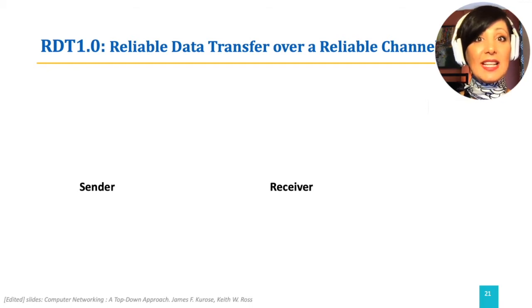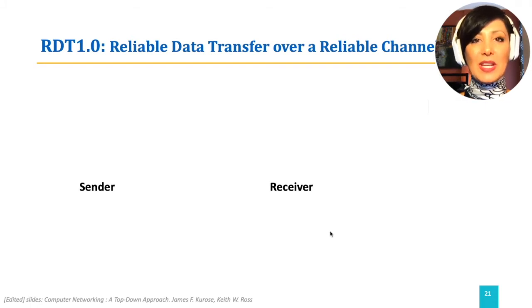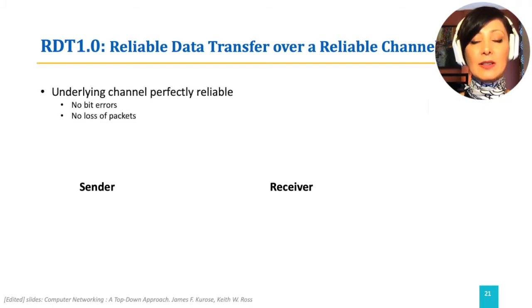Let's start designing our RDT 1.0 protocol with our first set of assumptions. For RDT 1.0, we assume that the underlying channel is completely reliable.